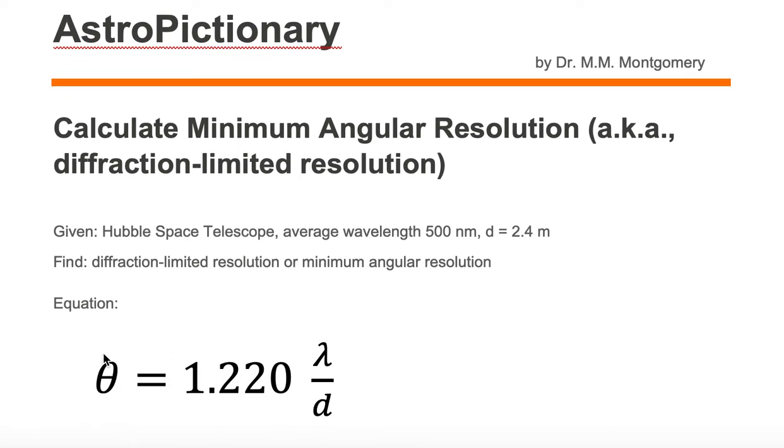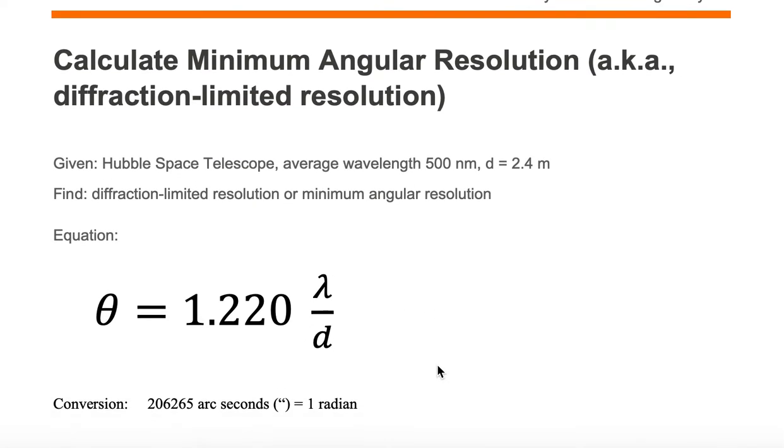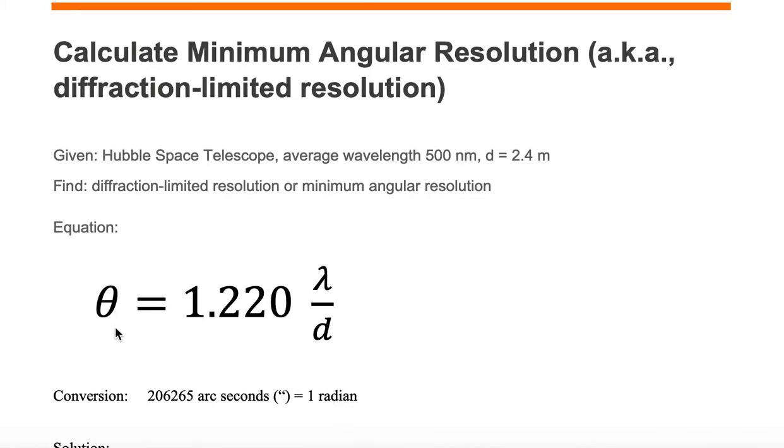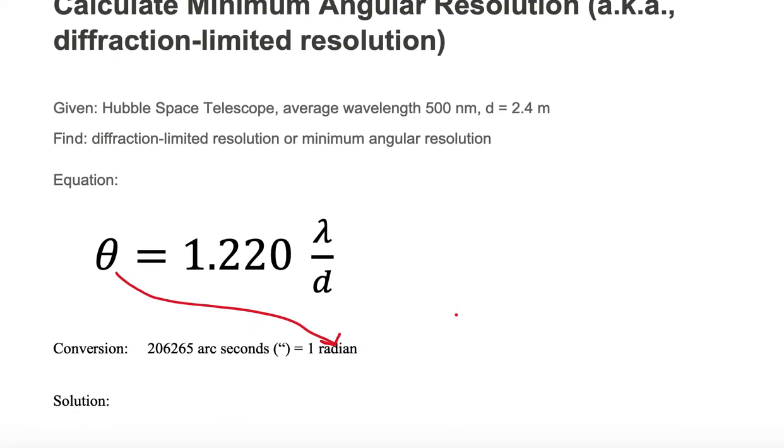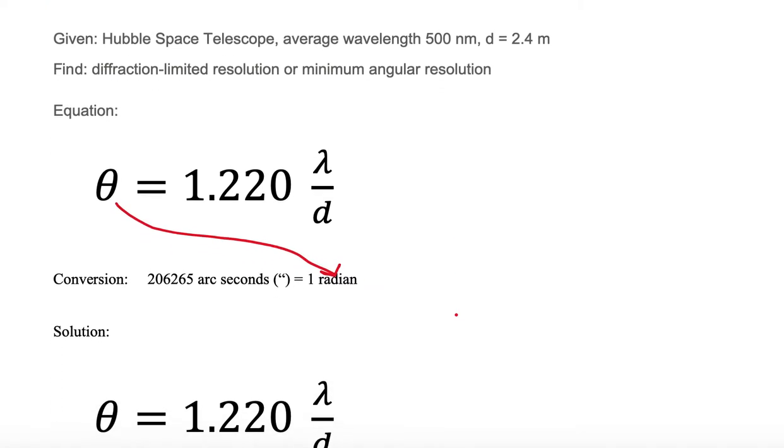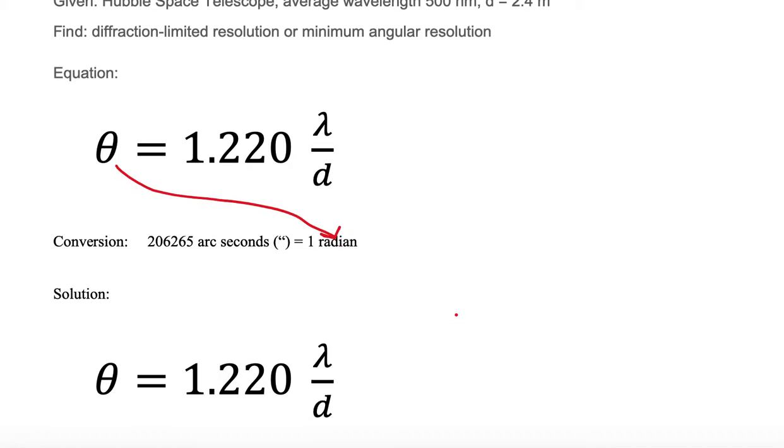We have an equation: theta equals 1.220 multiplied by the wavelength divided by the diameter. We're going to want to convert this from radians, because theta will be given in units of radians after you solve it, and we want to convert it into arc seconds, the angle that we measure in the sky from our eyes looking at objects or even from a telescope looking at the sky. Let's go ahead and rewrite the equation and solve.